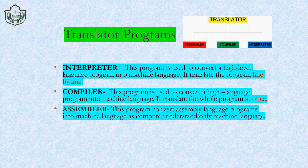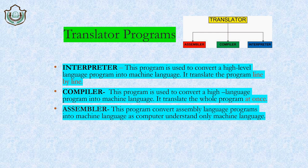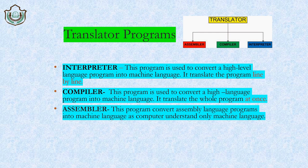The interpreter converts programs line by line — for example, converting 'hi,' then 'hello,' then 'how are you' one line at a time. The compiler is also a translator program that converts high level language into machine language, but it converts the entire program at once rather than line by line. So if you write 'hello how are you,' the compiler converts it all at once. The assembler, as the name implies, converts assembly language programs into machine language.